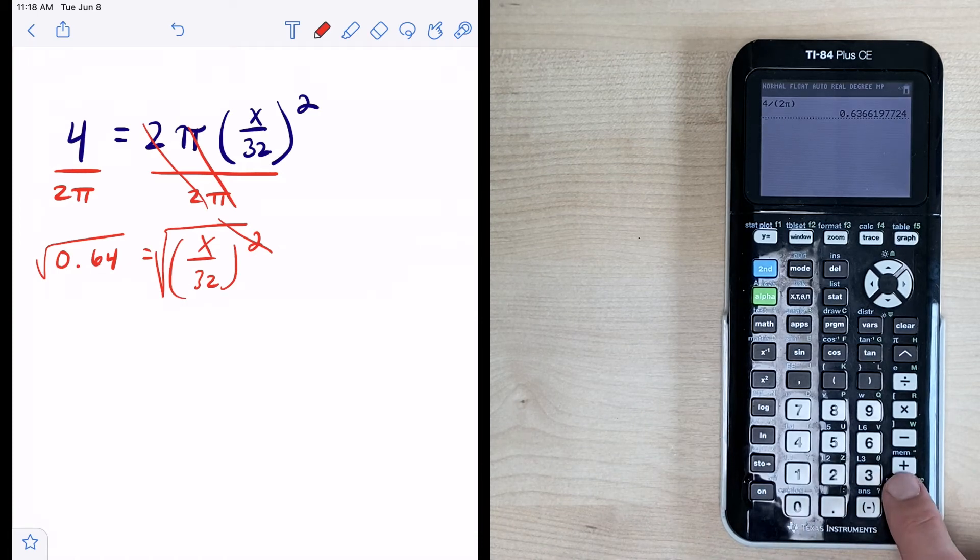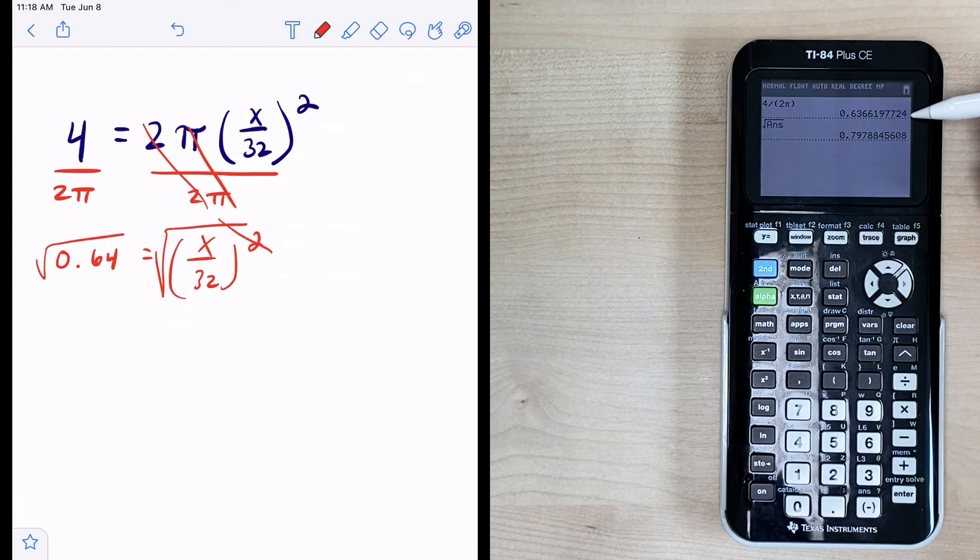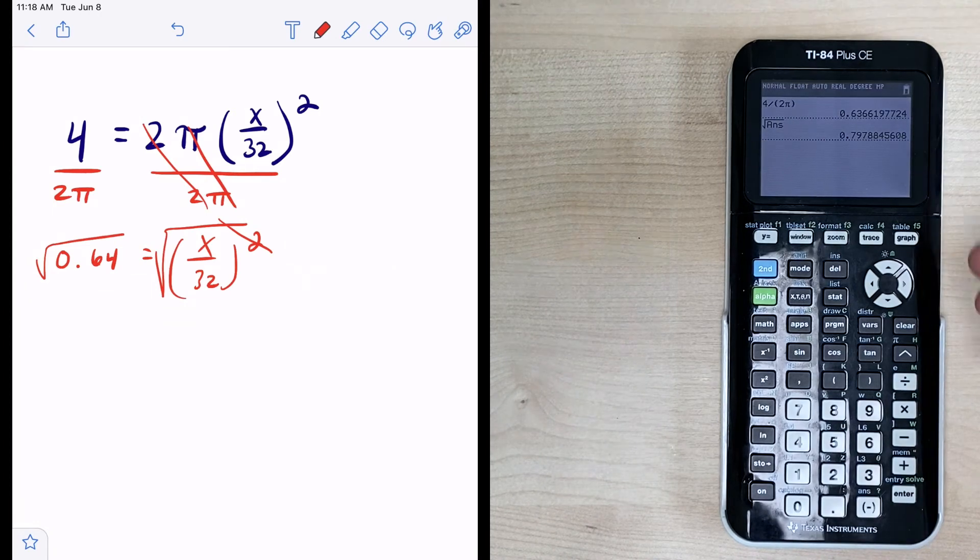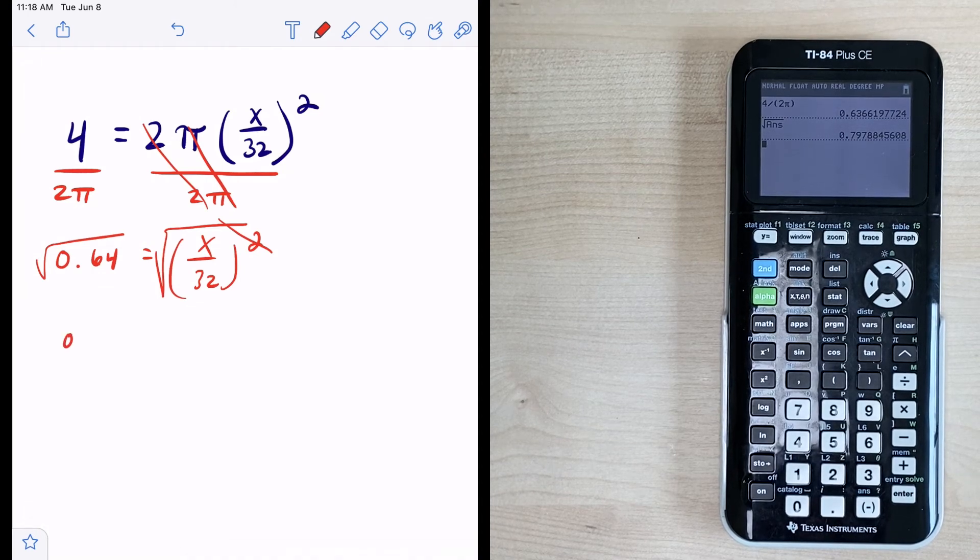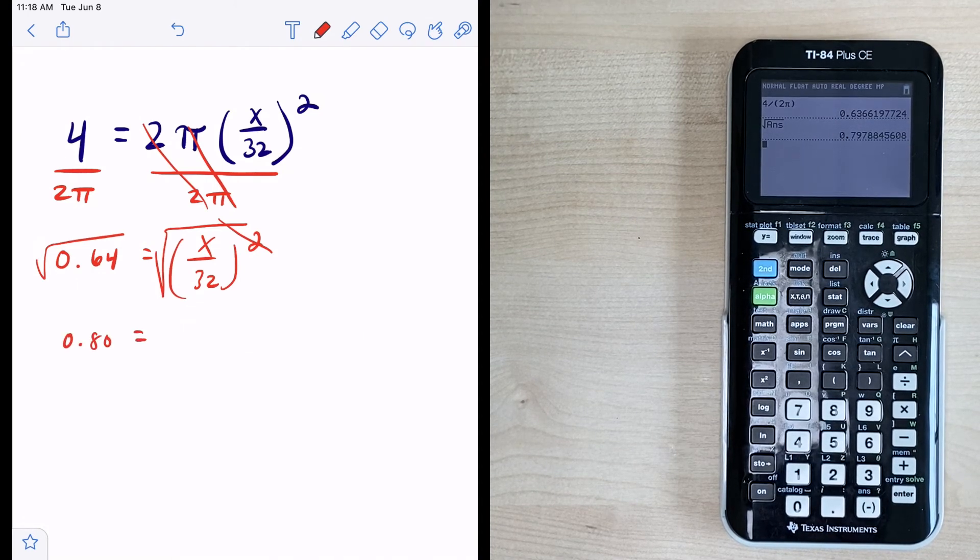So now once I hit enter it has taken the square root of this decimal that I had up here and I didn't have to retype that at all. So now on my work I'm going to say 0.80 is equal to x over 32.